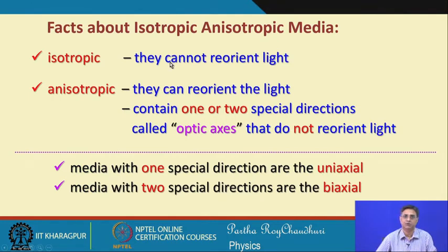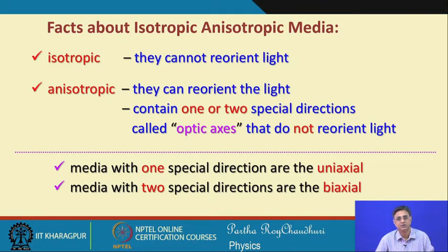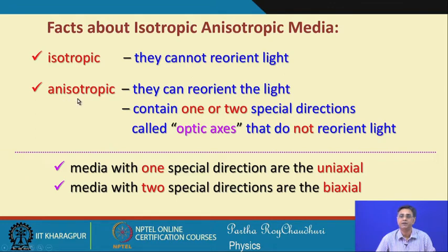For an isotropic medium the medium cannot reorient the light — light incident along a particular direction will emerge only along that direction, so the direction of propagation is not disturbed. The situation is different for an anisotropic medium; this property will be extensively used in various modulators and devices we will discuss later in this course.